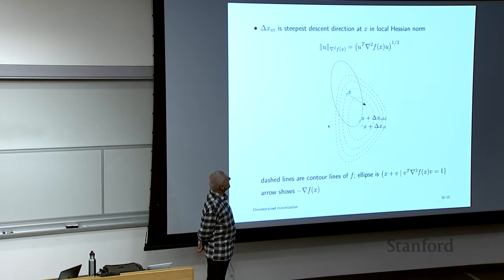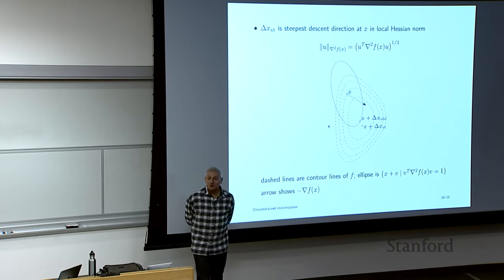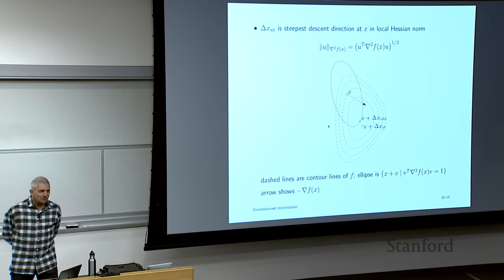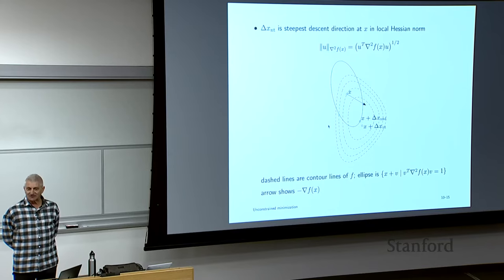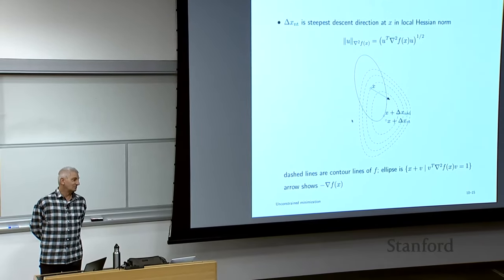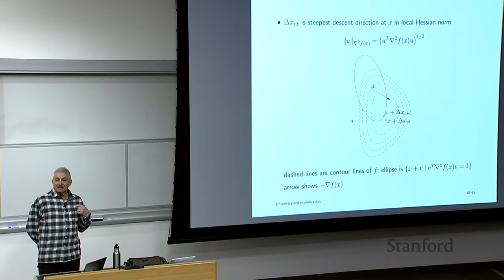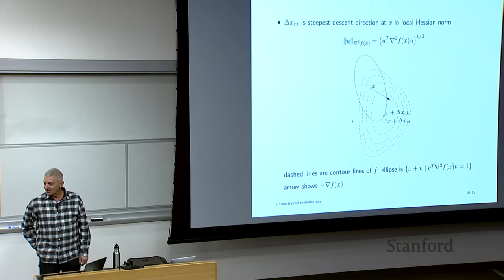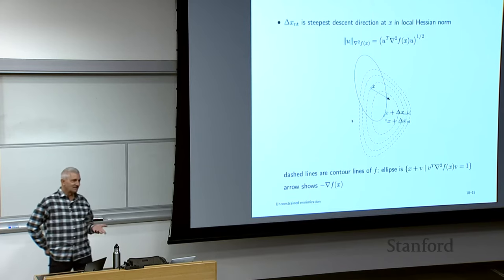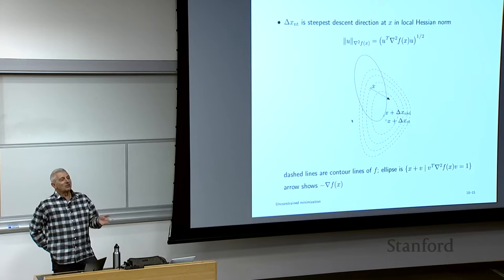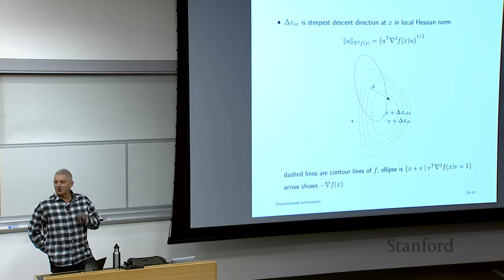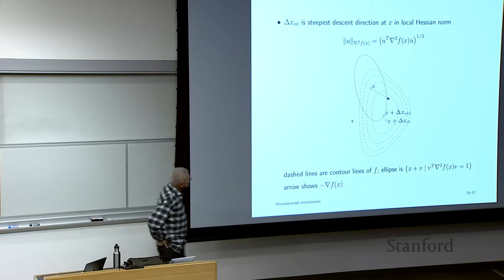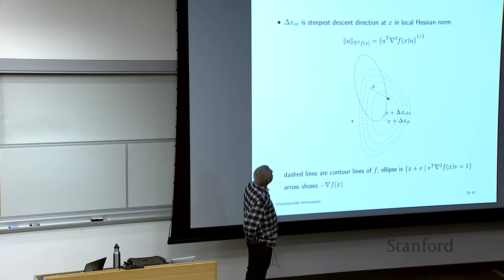It turns out the Newton step is the steepest descent direction in the metric given by the Hessian. That makes total sense: you land at X, ask someone for the steepest way down, they ask in what metric, and you say — do you know the Hessian at the minimizer? No. Fine — do you know the Hessian at the current point? Yes. We'll use that. And that gives you the Newton direction.